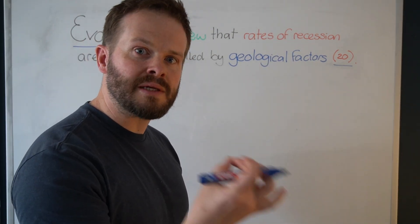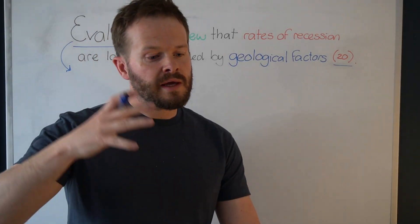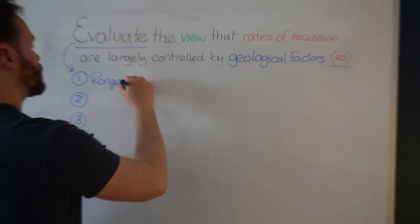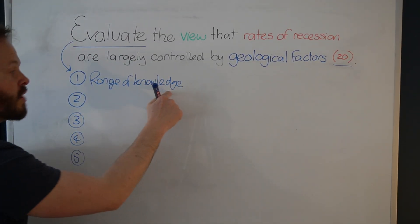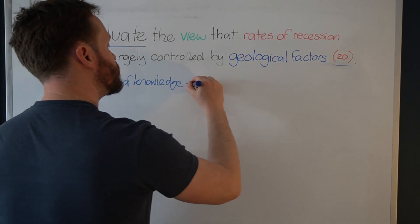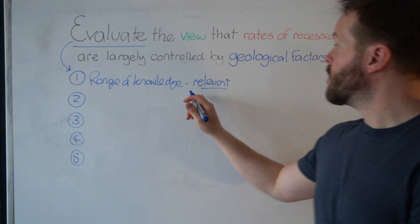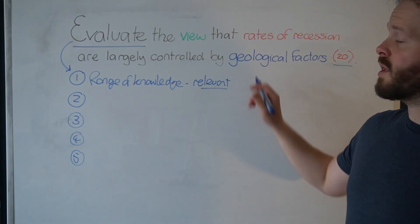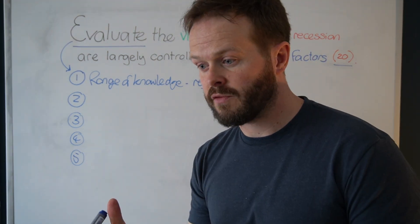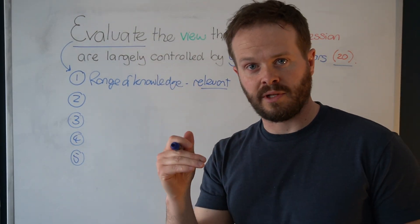What does it actually mean to evaluate? What I go through with my students is a high five. Number one: a range of knowledge — not just a range of knowledge, a range of relevant knowledge. Knowledge that is relevant to the question being asked of you. If it's irrelevant, you're not going to be credited. If it's inaccurate, you're going to go down a level.